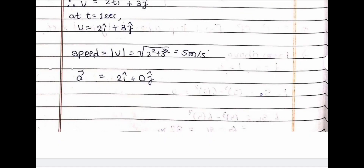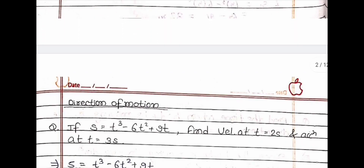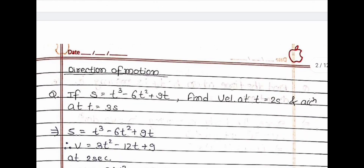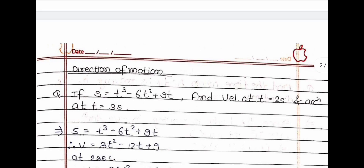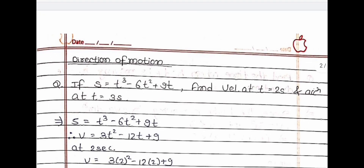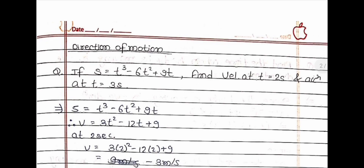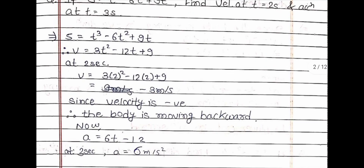Now let us come to the next question about the direction of motion. If s = t³ − 6t² + 9t, find the velocity at t = 2 seconds and acceleration at t = 3 seconds. In this question, you first differentiate distance to get velocity, substitute the value of time, then differentiate velocity again to find acceleration and substitute time.